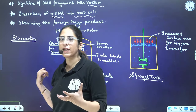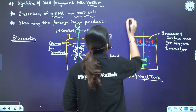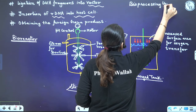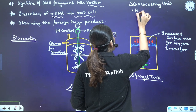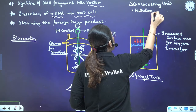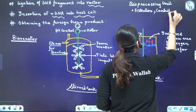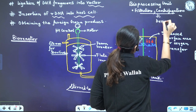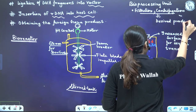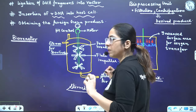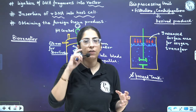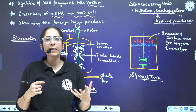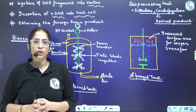Once cells are ready, we take them out and send them to the bioprocessing unit, where there is filtration, centrifugation, chromatography, and other methods to ultimately get the desired product. The desired product is then tested in various organisms to check for allergic issues. If everything is fine and tested okay, we pack it and distribute it in the market.